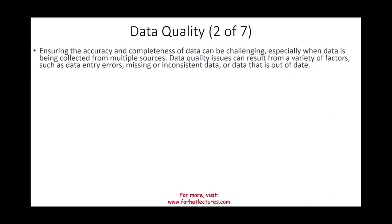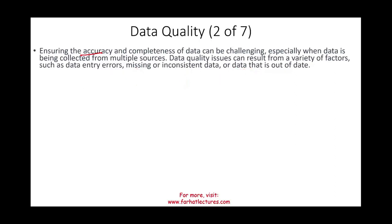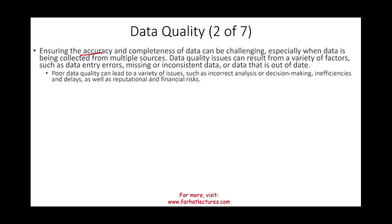The second challenge is data quality — ensuring the accuracy and completeness of the data. This can be challenging especially when data is collected from multiple sources. Data quality issues can result from incorrect data entry, missing data, inconsistent data, or data that is out of date. All of this creates poor data. Poor data leads to incorrect analysis or decision-making, inefficiencies, delays, as well as reputational and financial risk. Poor data is really expensive because it leads to poor business decisions.